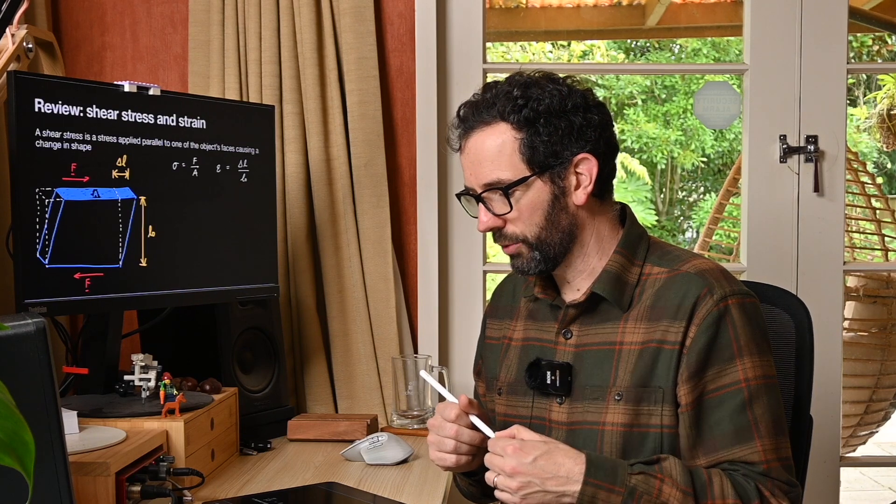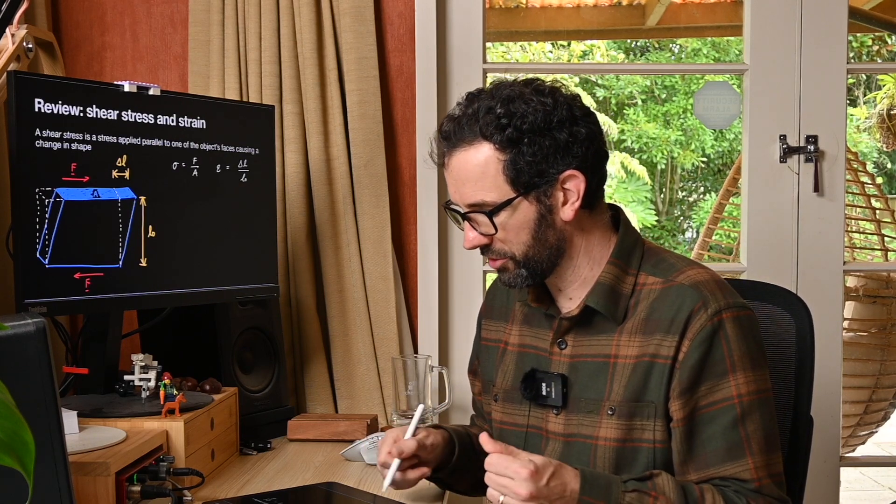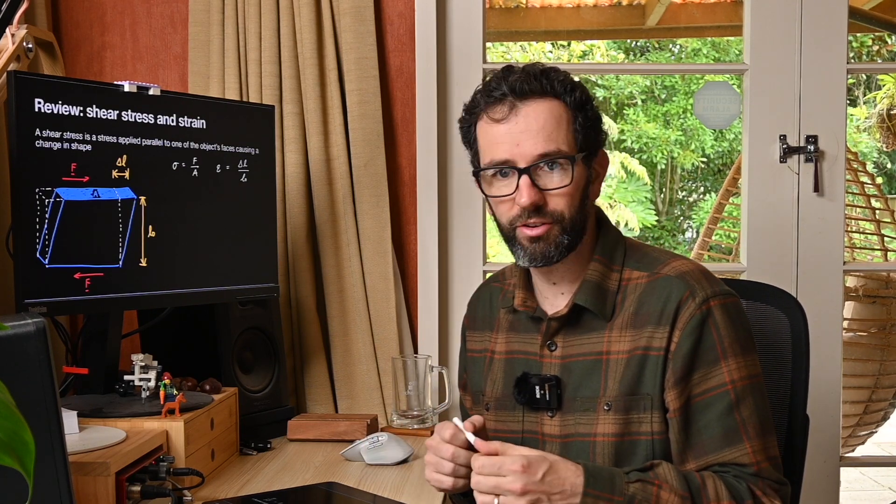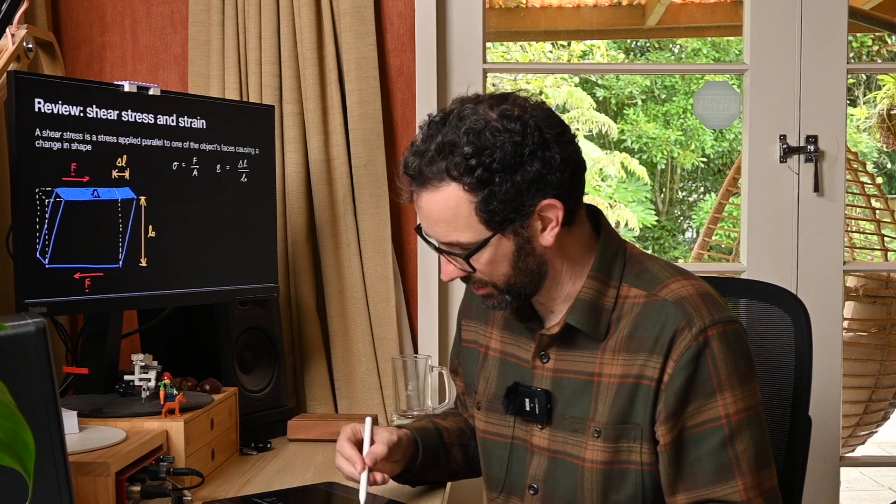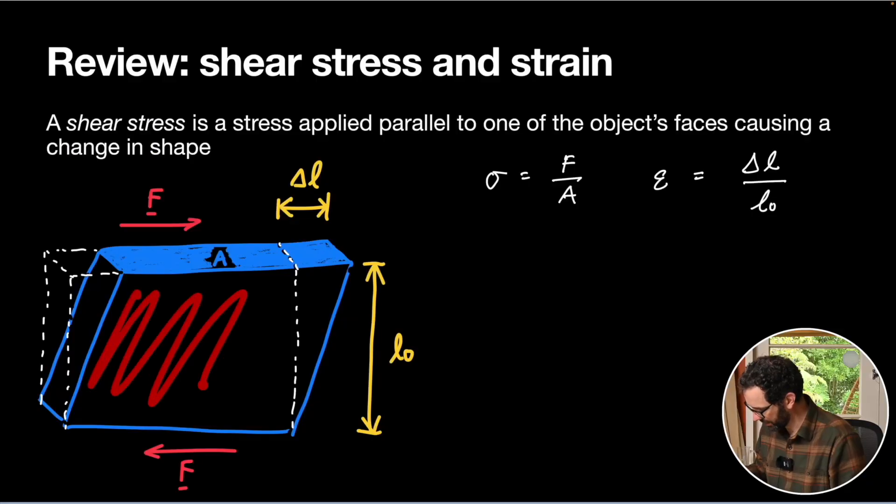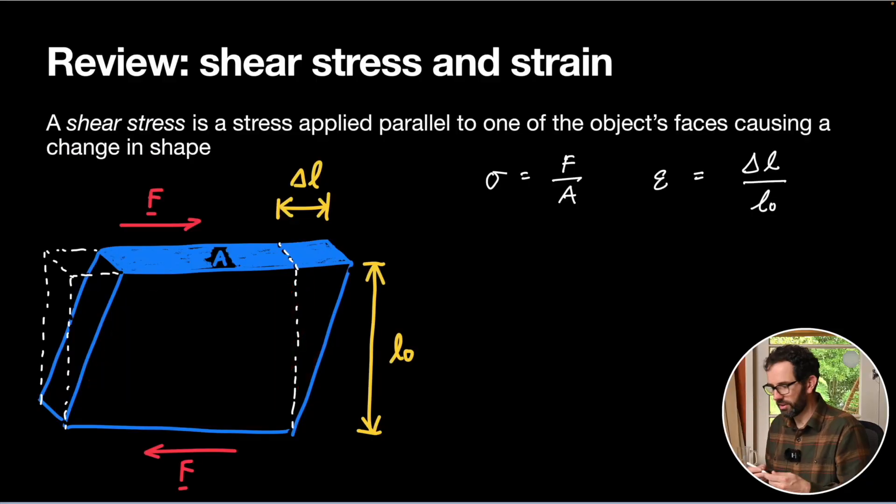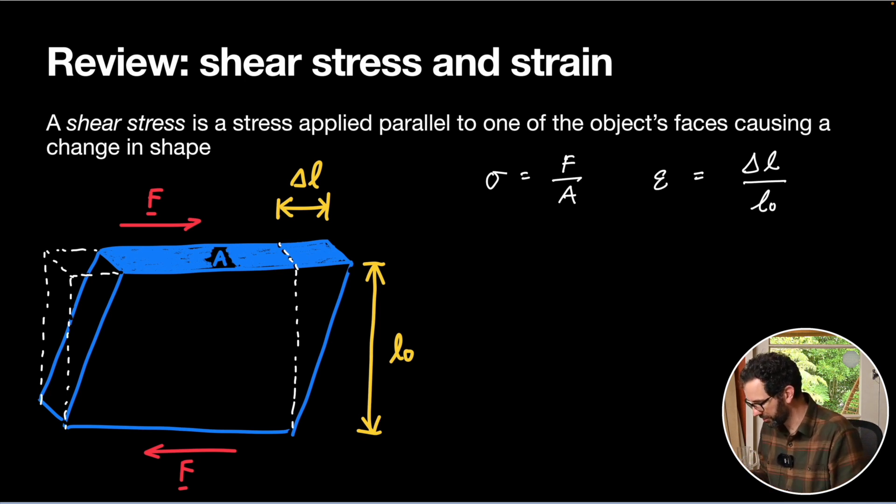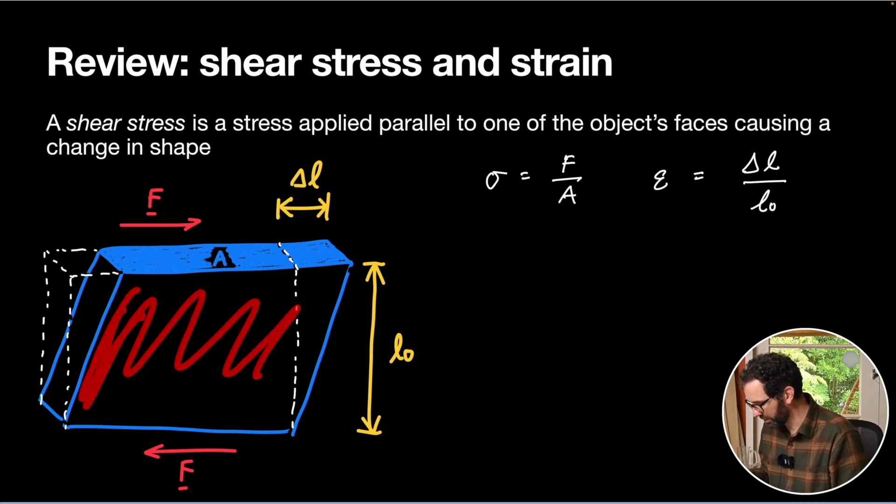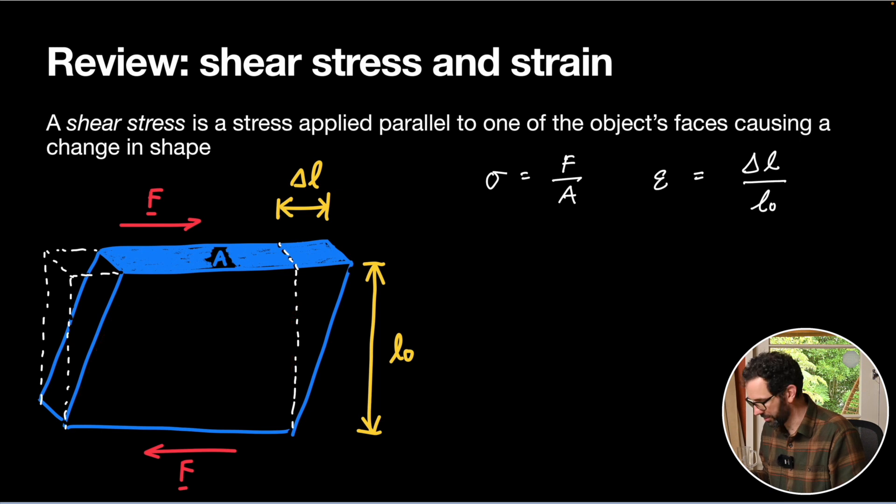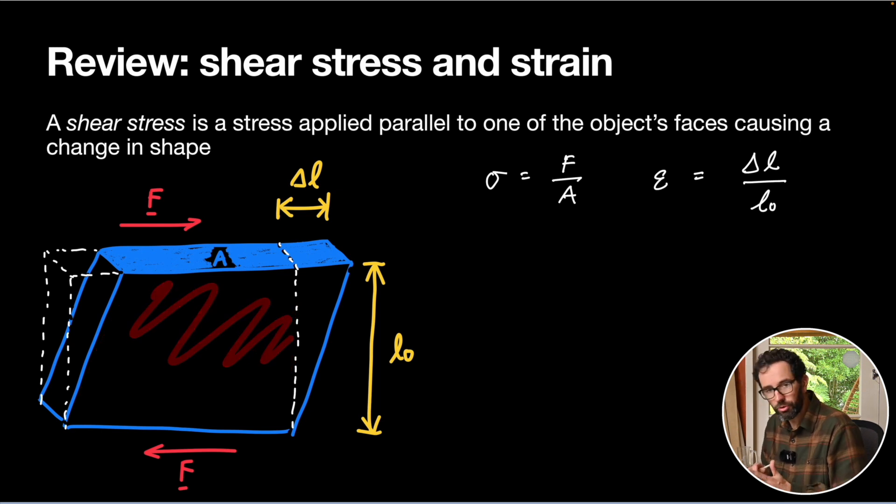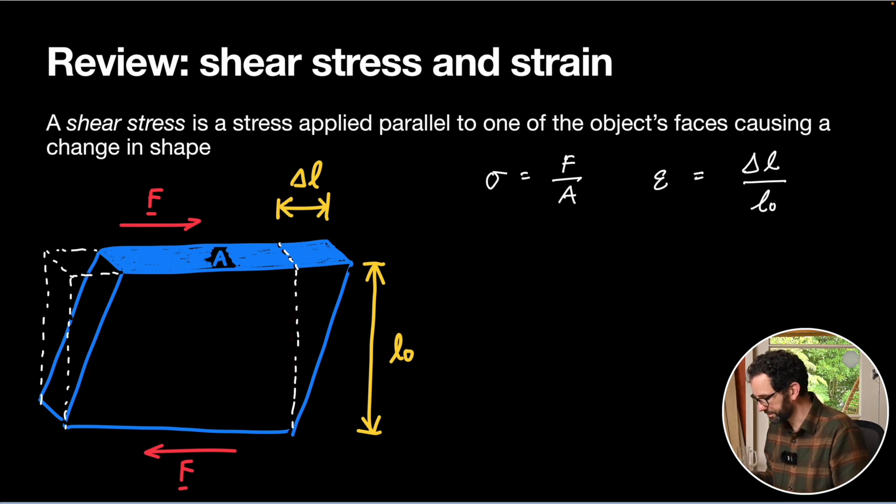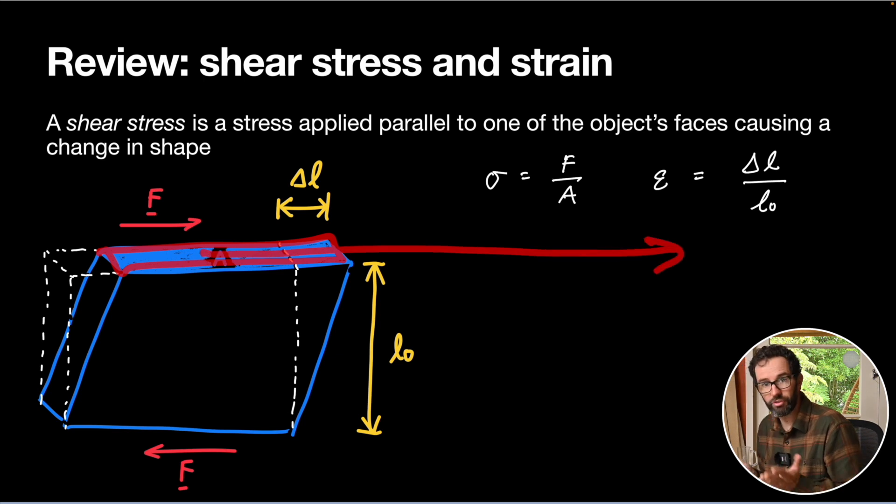Now if we do this to a liquid, imagine instead of having our sponge here, we've got a layer of liquid in the gap. One of the things that defines how liquids behave is that if we apply this kind of force with a liquid in between, rather than just deforming to a certain position and staying there, essentially the liquid will start to flow. And our plate along the top here will go moving off this way at a certain speed.